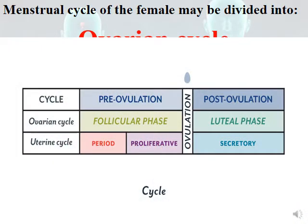The ovarian cycle is composed of a pre-ovulation phase called the follicular phase, and a post-ovulation phase — after ovulation — called the luteal phase. So: pre-ovulation is the follicular phase, and post-ovulation is the luteal phase.